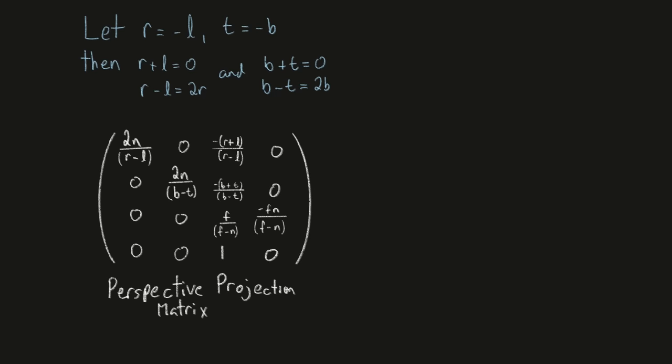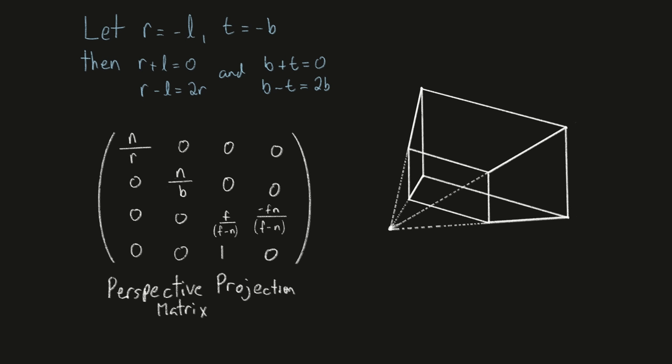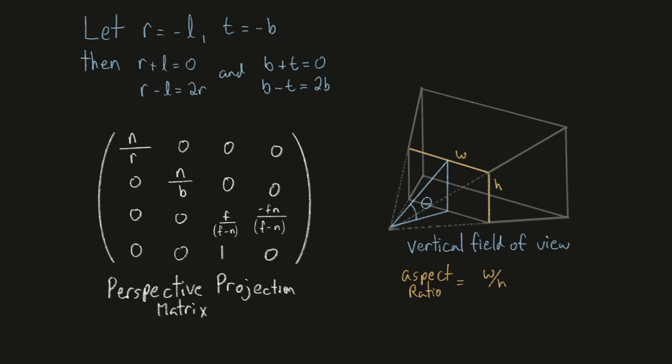Finally, it is common to specify a vertical field of view, rather than use the values for the bottom and the right planes. The vertical field of view is the angle from the bottom to the top of the near plane relative to the viewer's line of sight. If we also know the aspect ratio of the window, we can easily calculate values for the bottom right corner with some basic trigonometry. So the bottom value is equal to the near plane distance times tan theta over 2, and the right value is equal to the window's aspect ratio times the bottom. Plug this in and simplify, and we get the final form of the perspective projection matrix.